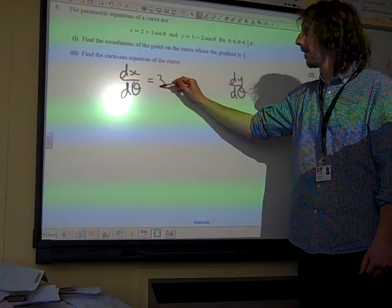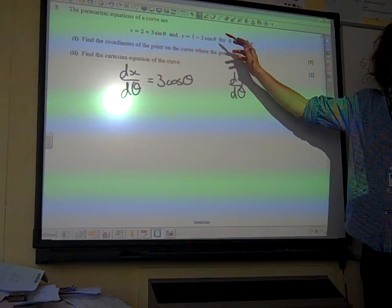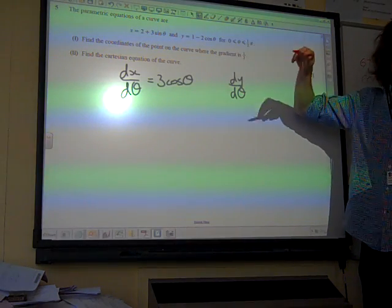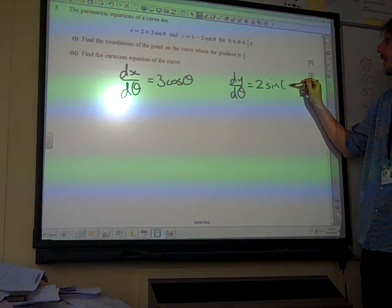Differentiate sine theta, we get cos theta. Differentiate cos theta, and we get cos differentiates to minus sin. We get minus sine theta, so that gives us two sine theta.